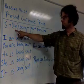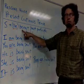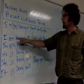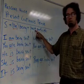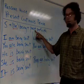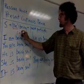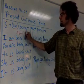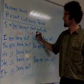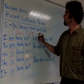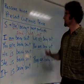And after the verb 'be,' we use 'being.' I am being. And for the past participle, in this case we're using the verb 'send.' Sent in the past tense — the past participle is also 'sent.'